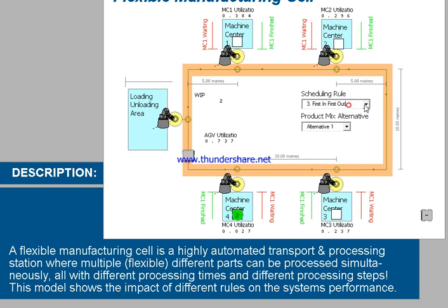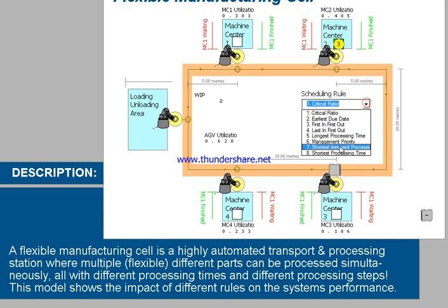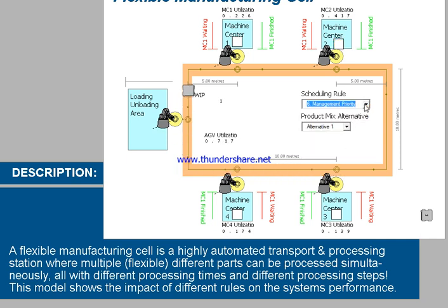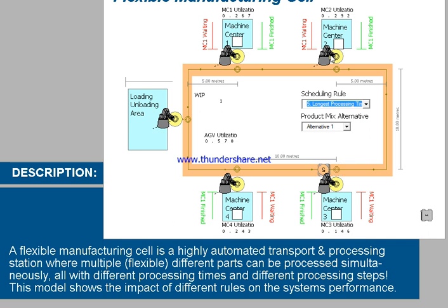If we change to critical ratio, the system will apply shortest job management priority or longest processing time as a scheduling rule, and you can see how it changes between one machine and the other. Here you can see the utilization ratio of every single machine, and which one handles the steps when longest processing time is applied as the scheduling rule. If you want a copy, please follow the link.